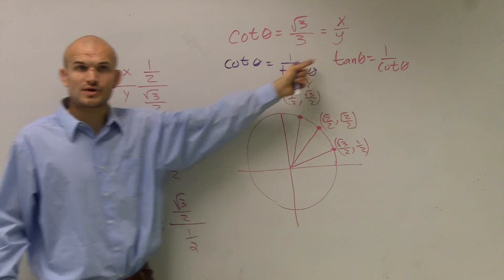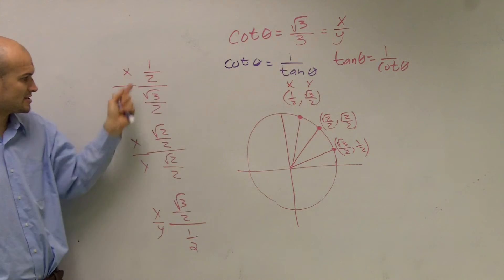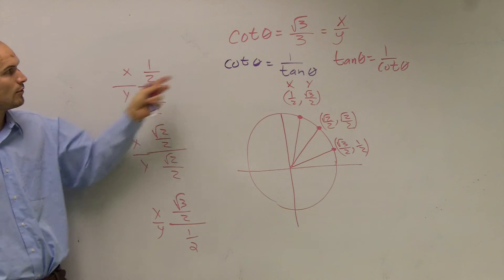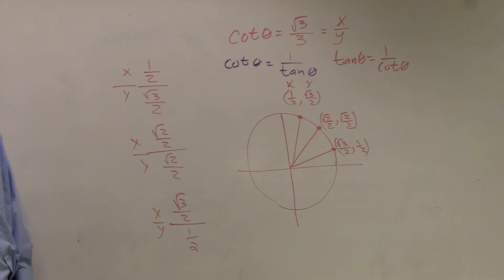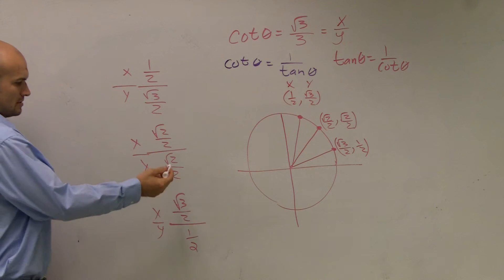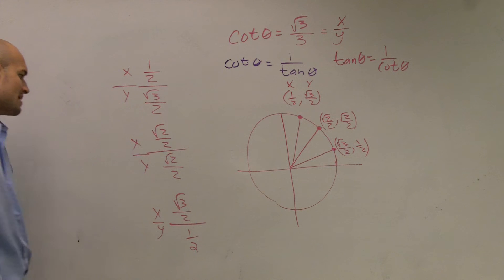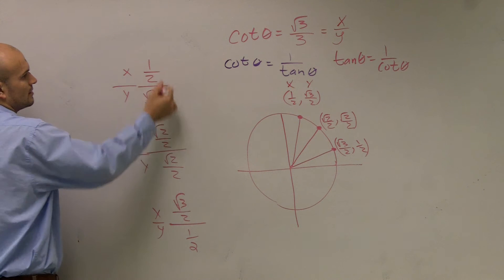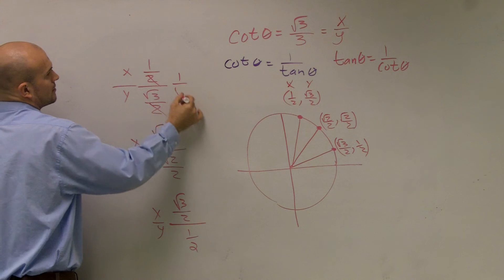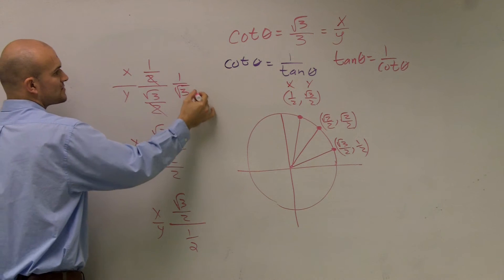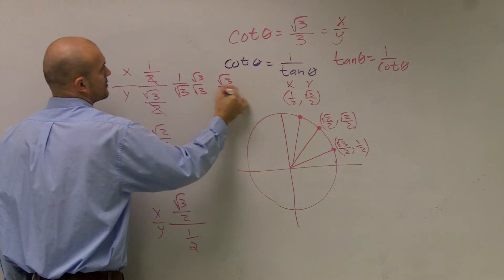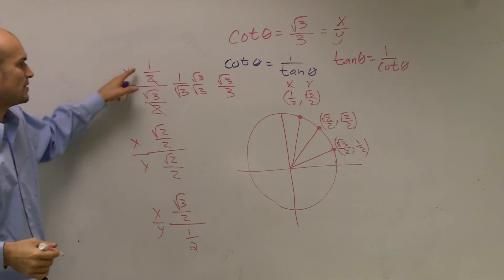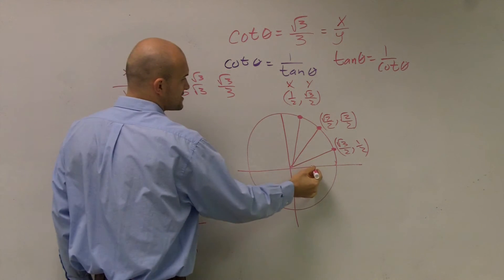So I took all my x over my y's and said: which one is going to produce the square root of 3 over 3? And by doing the math, this one — which was 1 half over radical 3 over 2 — is going to produce the result that I want. So I know it's going to be pi over 6.